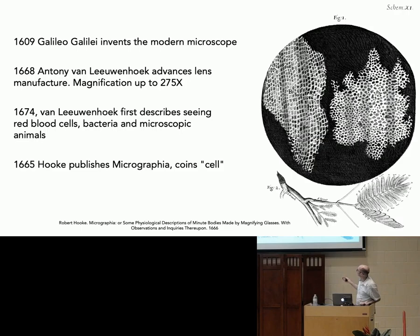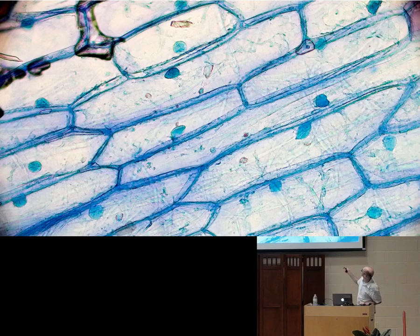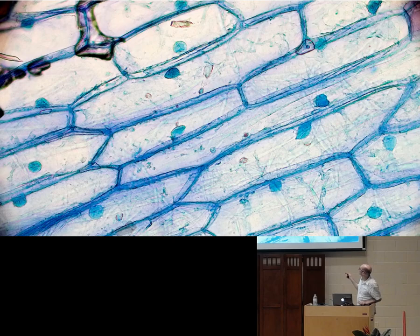Here's a picture of onion skin. This is sort of a typical high school project where you peel an onion skin very thinly, and then you can look under the microscope and you might stain it so that you can see the structures more clearly. You can see these plant cells with different parts — the nucleus and the cell wall.